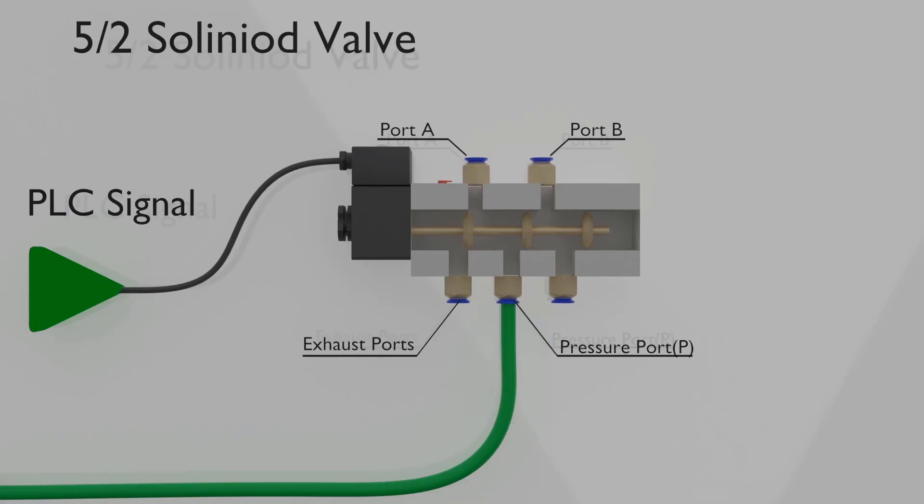A 5/2 valve has 5 ports for compressed air. One of these ports is P port, its pressure port where compressed air enters the valve. There are two other ports, port A and port B.